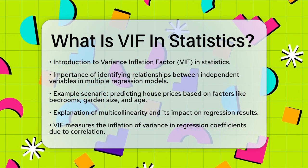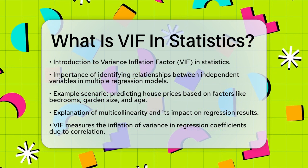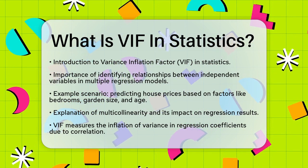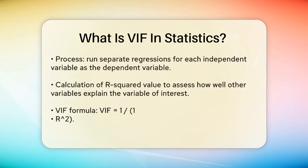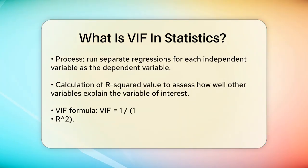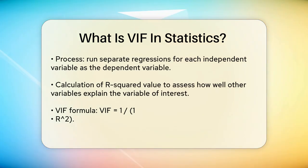The VIF is a measure that helps you understand how much this correlation, known as multicollinearity, affects your regression results. It calculates how much the variance of a regression coefficient is inflated because of this correlation.